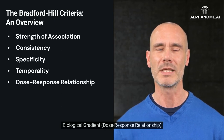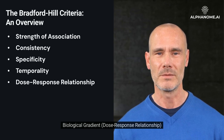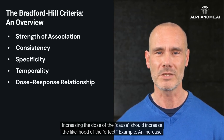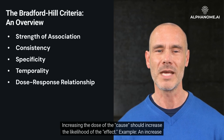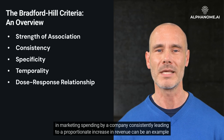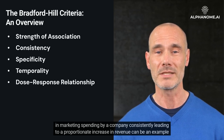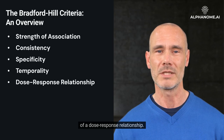Biological Gradient — Dose-Response Relationship: Increasing the dose of the cause should increase the likelihood of the effect. Example: an increase in marketing spending by a company consistently leading to a proportionate increase in revenue can be an example of a dose-response relationship.